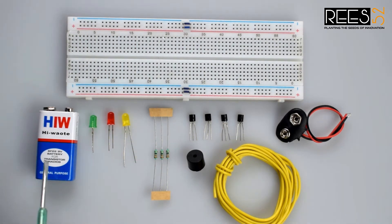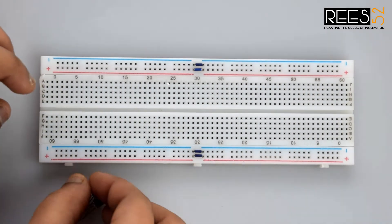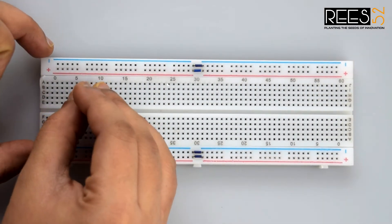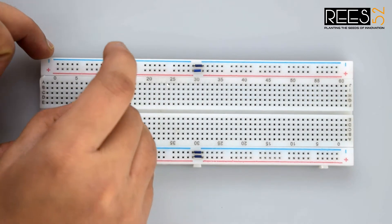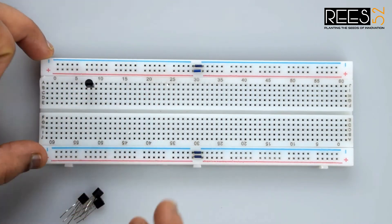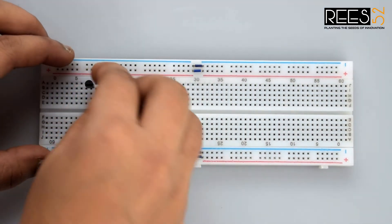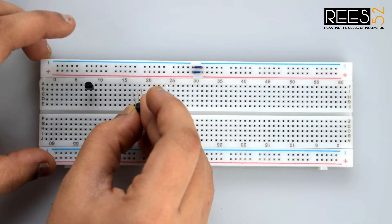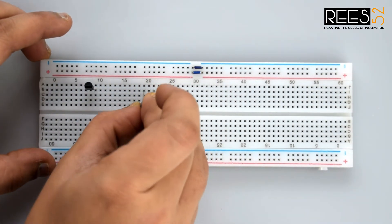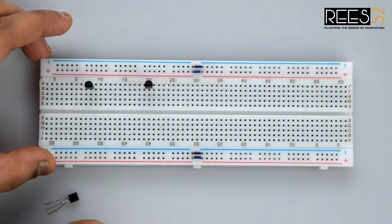First of all attach all the transistor BC547 to the breadboard. I will connect them facing towards me. So the first pin will be collector pin and the second pin is base pin that is the middle pin, and the third pin is emitter.